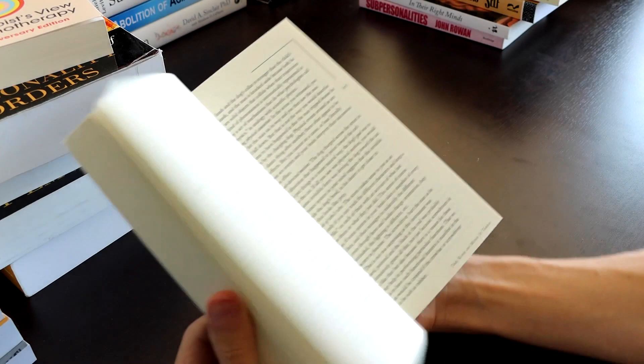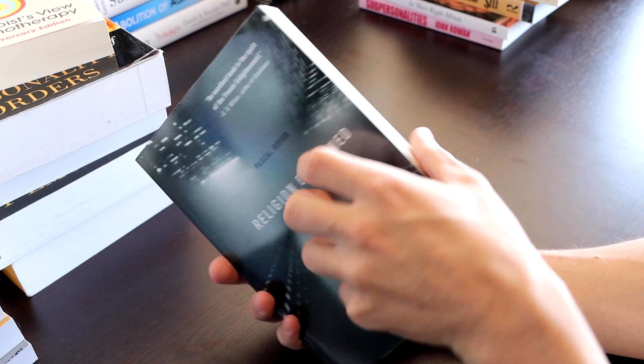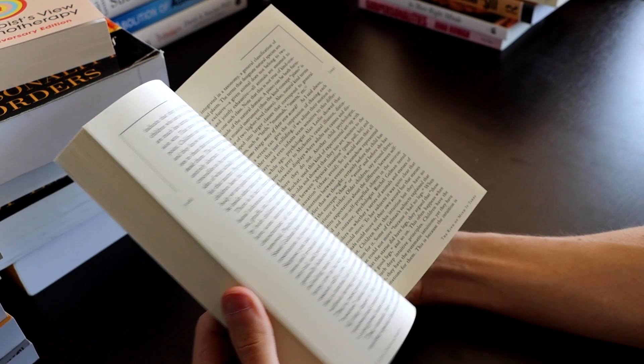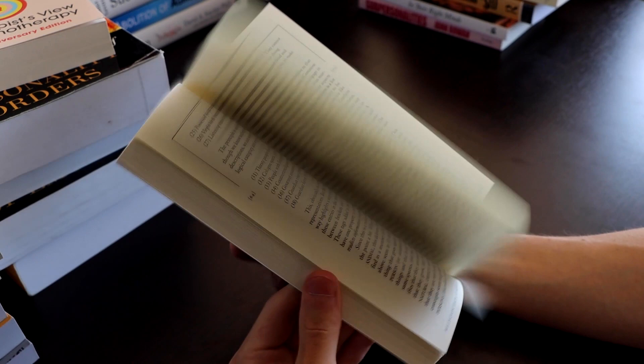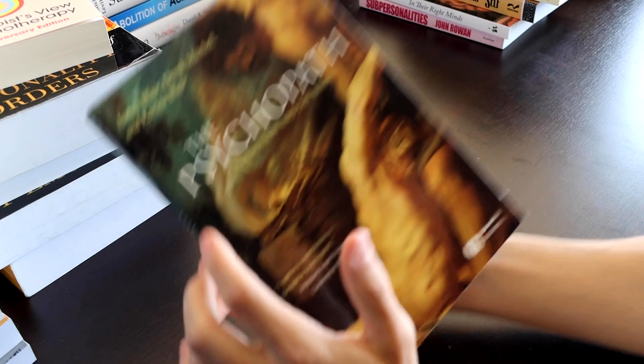Religion Explained: The Evolutionary Origins of Religious Thought. So this is a super cool book. It basically provides cognitive models about how religion evolved through cognition, how these kinds of beliefs are adaptive. I think a lot of people who are atheists would enjoy this book, and maybe even if you're not an atheist you might enjoy this book. But if you're into evolutionary psychology, then definitely pick this book up.